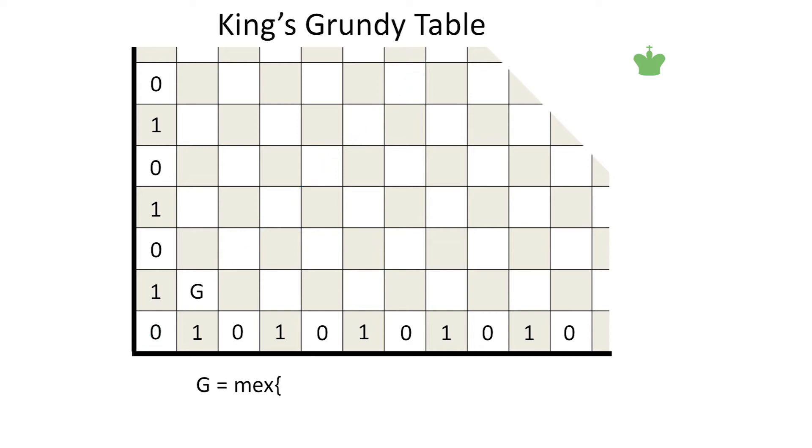So now let G be the Grundy number of the next location, not on either the bottom row or the leftmost column. This position has three followers. The number to its west is 1. To the southwest, it is 0. And to the south, it is 1. So the value of this G is the mex of 1, 0, and 1, which is 2.